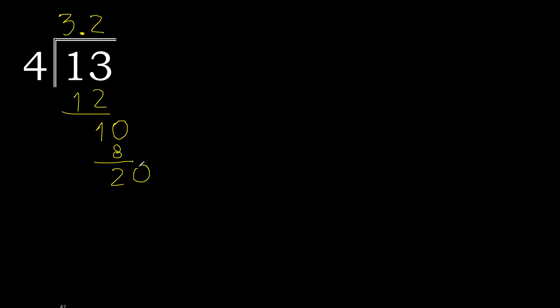Always complete with 0. Place point here. Bring down 0, making 20. 4 multiplied by 5 is 20. 20 minus 20 is 0.